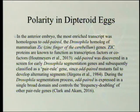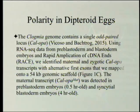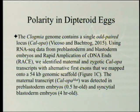During the Drosophila segmentation process, odd-paired is expressed in a single broad domain and controls the frequency doubling of other pair-rule genes — so it's kind of a master gene. The Clogmia genome contains a single odd-paired locus, CalOpa.